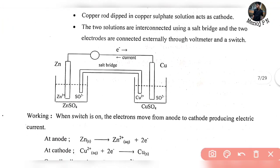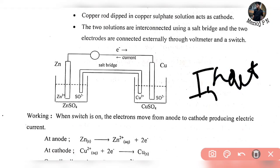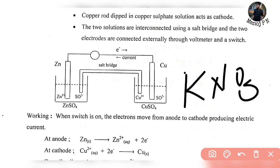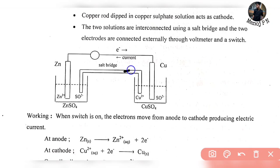Now let's talk about the salt bridge separately. The salt bridge is an inert electrolyte — it will not undergo any oxidation or reduction. Examples of inert electrolytes used in a salt bridge are KNO3 and KCl, used in gel form.